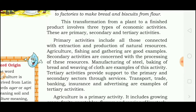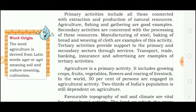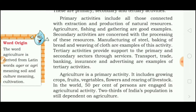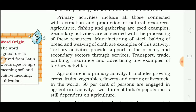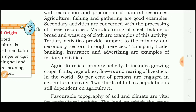Primary activity is the first activity. For example, once you have grown a crop of wheat, then you would take wheat to the factories to make it into flour. This is a secondary activity. Secondary activities are concerned with the processing of these resources. Manufacturing of steel, baking of bread and weaving of cloth are examples of secondary activity. After making the biscuit, you will transport it, trade with the biscuits, or advertise to sell the biscuits. These activities are tertiary activities.